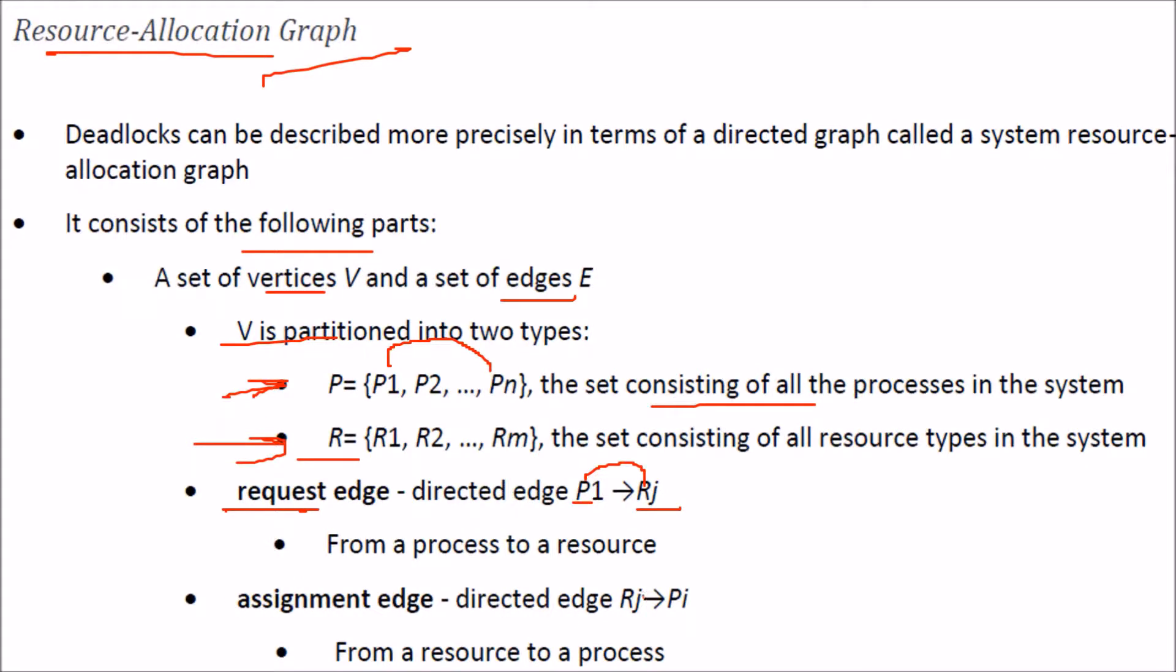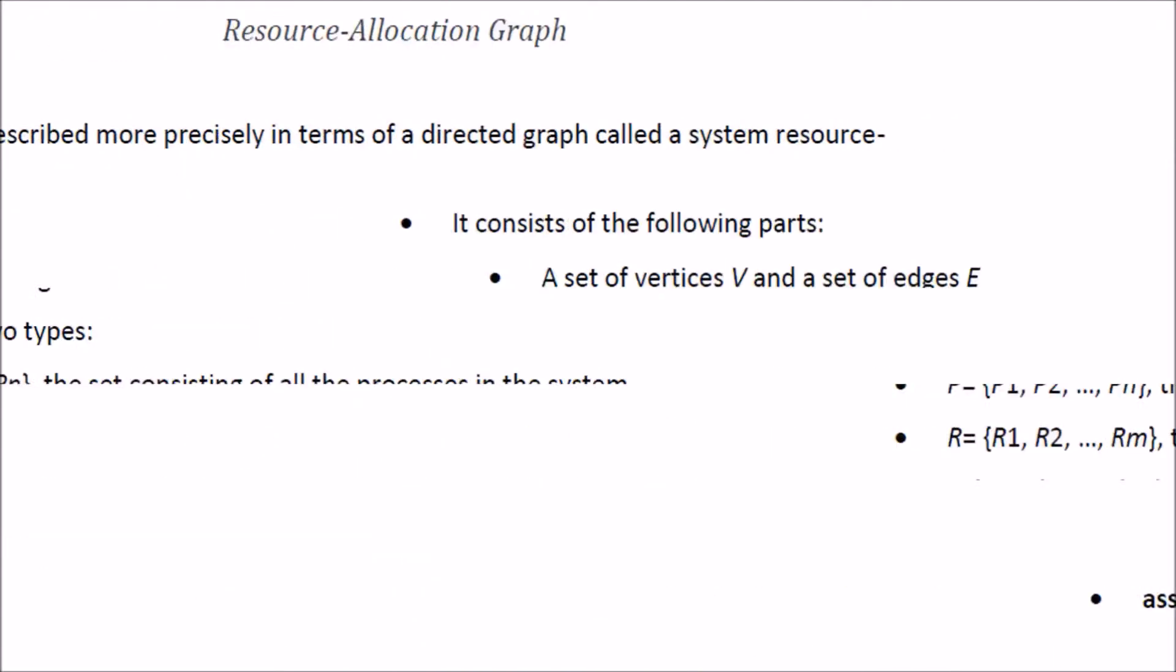Assignment edge, Rj to Pi, this is again a directed edge. That means you have a direction. This means the resource R is assigned to Pi. That is, some process is holding that resource. That is assignment edge.